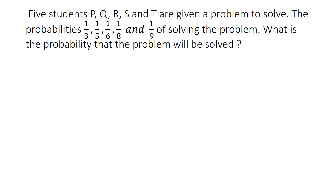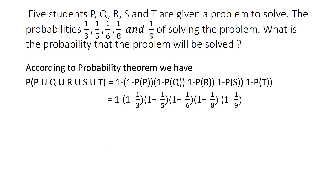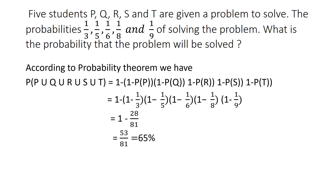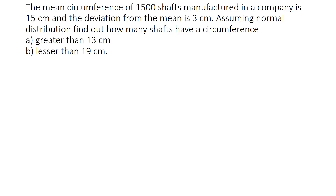Next problem: five students P, Q, R, S, and T are given a problem to solve. Their probabilities of solving it are 1/3, 1/5, 1/6, 1/8, and 1/9 respectively. What is the probability the problem will be solved? First find the probability of each NOT solving it: for P, it is 1 − 1/3. Then the probability the problem IS solved is 1 minus the product of all non-solving probabilities. Solving gives 53/81, which is approximately 65%.